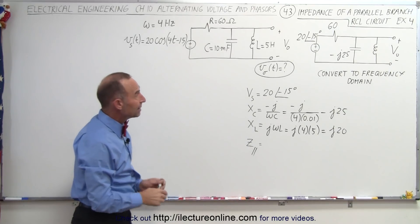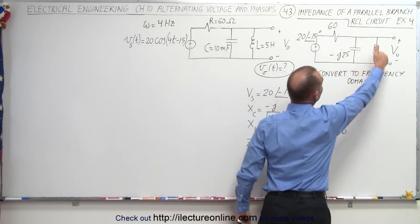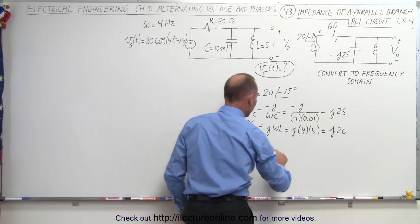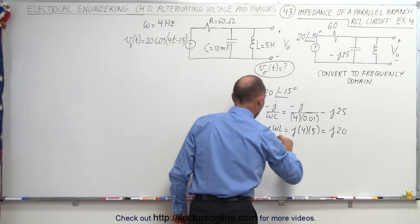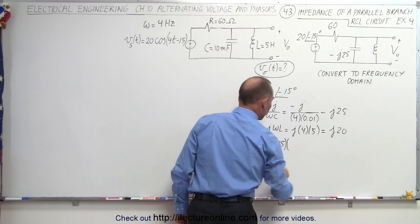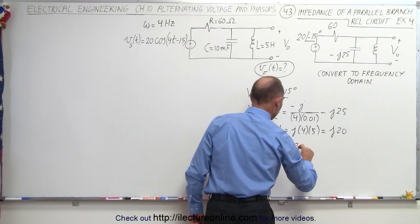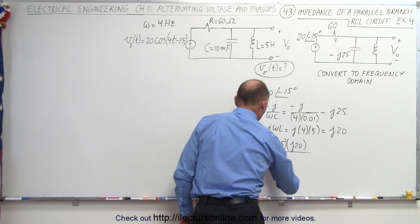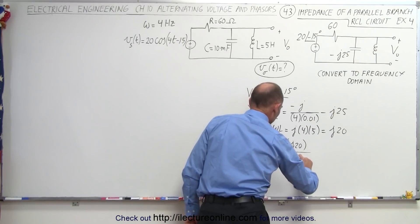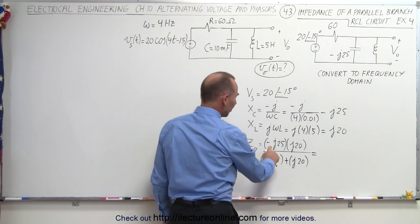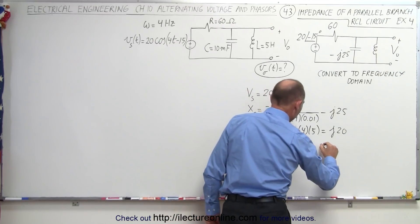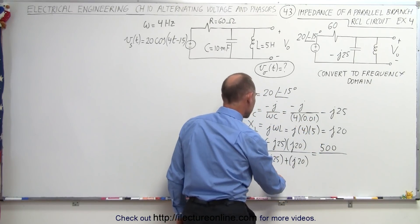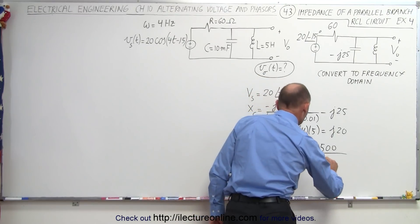Now that we have that, we want to find the impedance of the two components together — they are in parallel. To find that, we take the product over the sum. The product is minus j25 multiplied by j20, all divided by the sum in the denominator: minus j25 plus j20. J times j is negative one, times negative one is positive one, so the numerator is positive 500. The denominator gives us minus j5.